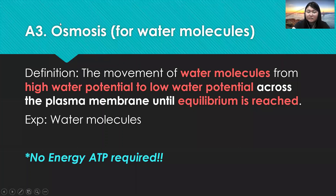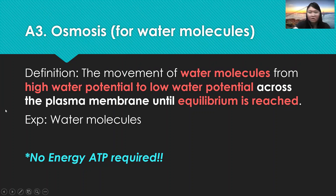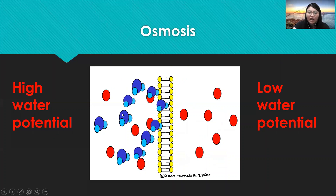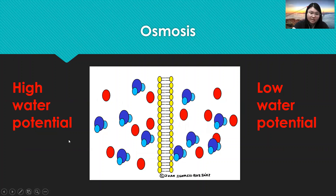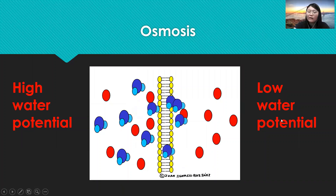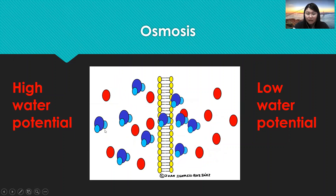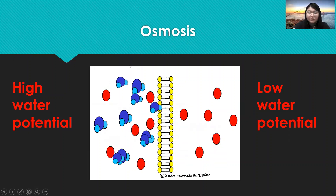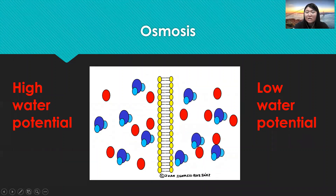Now let's look at osmosis — the third type of passive transport. Osmosis is a special term used for water molecules. The definition: osmosis is the process of movement of water molecules from a high water potential to a low water potential across the plasma membrane until equilibrium is reached. No energy ATP is required because it is from high to low. As shown in the GIF, the left-hand side has high water potential and the right-hand side has low water potential, so water molecules move from left to right until equilibrium.